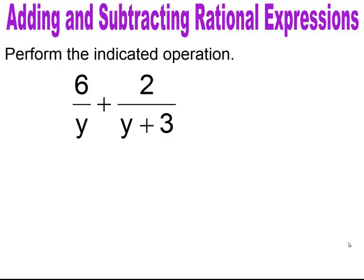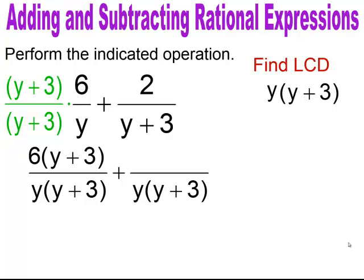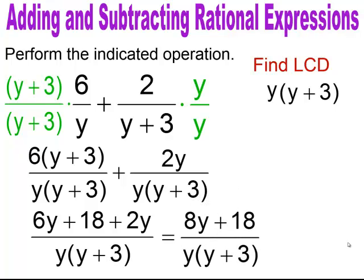Pause and try. The common denominator is y(y plus 3). Convert the first fraction by multiplying numerator and denominator by (y plus 3), applying the distributive property: 6 times (y plus 3). The second rational expression is multiplied by y, giving 2y. Combining everything: 6y plus 18 plus 2y over y(y plus 3). Combining like terms gives 8y plus 18 over y(y plus 3).